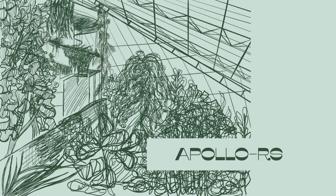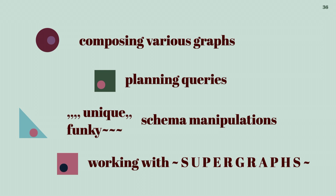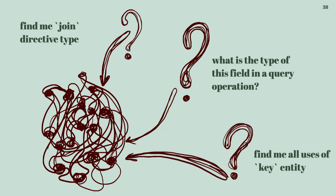To be part of the GraphQL and Rust ecosystem, it makes sense for us to plant a seed that could later grow into a really healthy garden, which is why we're writing Apollo Rust. The question you might be asking is: why are you building a compiler for a query language? We've been working with critical infrastructure and want to do various things with complicated schemas — compose graphs, plan queries, do funky manipulations, and work with Supergraphs. To do that, we want to ask questions of our schemas and queries — things like, find me the join directive, what is the type of a field in a query operation, and can you find all use cases of the key entity?